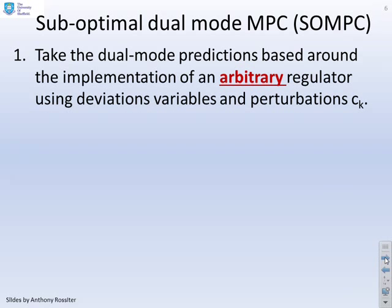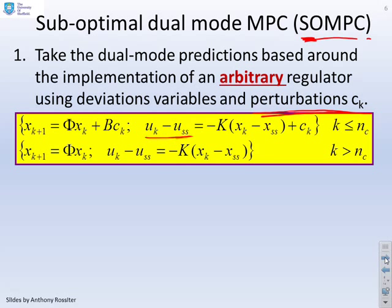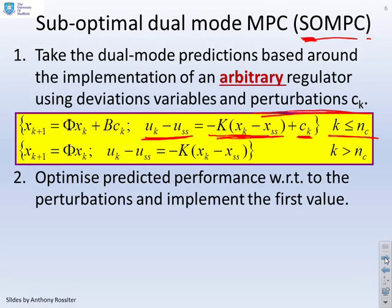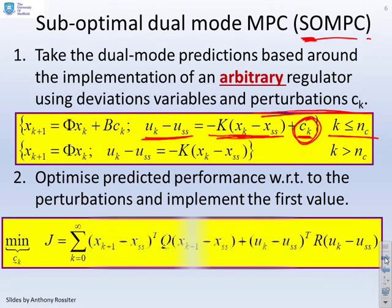Taking the dual mode predictions based around an arbitrary regulator, that's the suboptimal predictive control law, we introduce the predictive control side by adding perturbations C to the control law. The control law is the deviation variable U_K minus U_SS minus K times X_K minus X_SS, with the C_K term added for the first N_C steps. We then optimise predicted performance with respect to the perturbations C and implement the first value. The only difference from before is that everything is now done in terms of deviation variables.